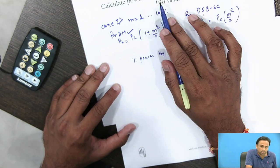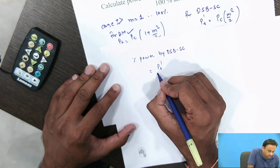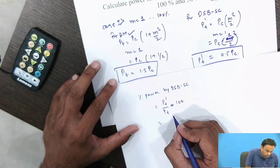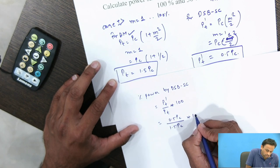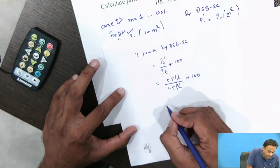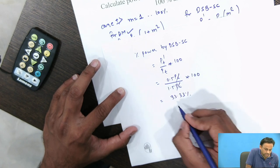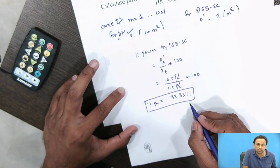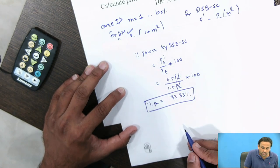The percentage power used by DSB-SC is (Pt'/Pt) × 100 = (0.5 Pc / 1.5 Pc) × 100. The Pc cancels out, giving 33.33%. So the percentage power used by DSB-SC is 33.33%.